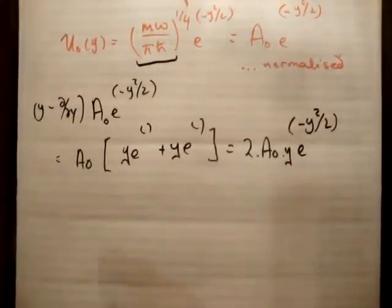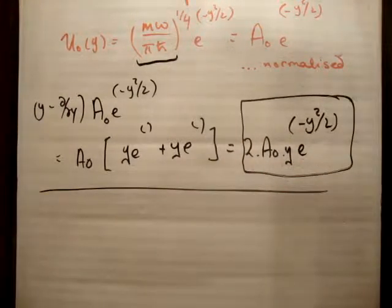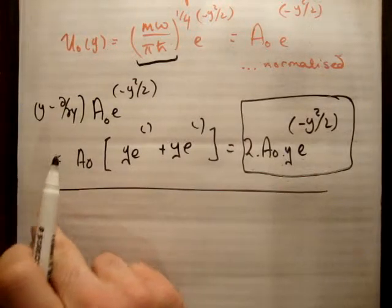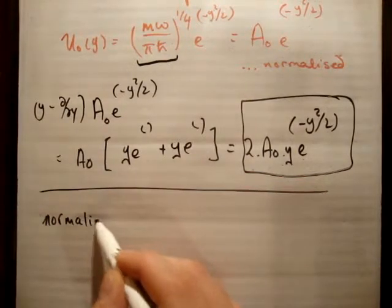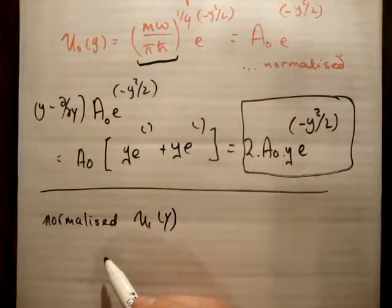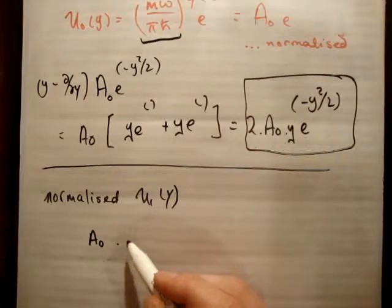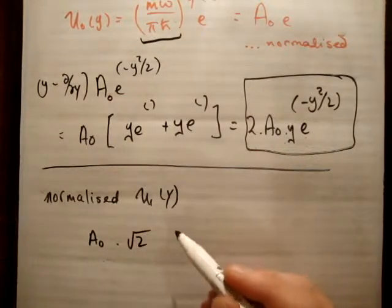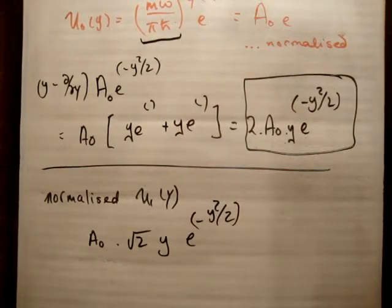Now, what's interesting is, that's what we got by applying our raising operator on our normalized wave function. So what happened when we actually found out what the normalized wave function is? The normalized U1 of Y is equal to A0 times root 2 times Y times e to the minus Y squared over 2. That's what we found.